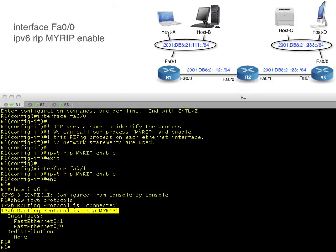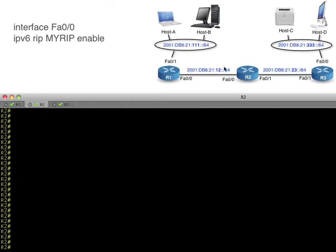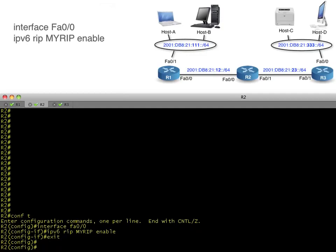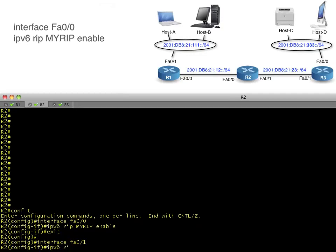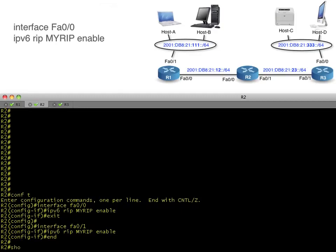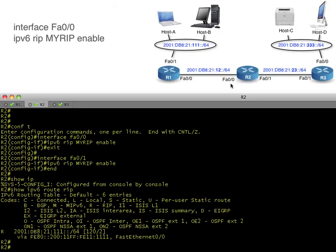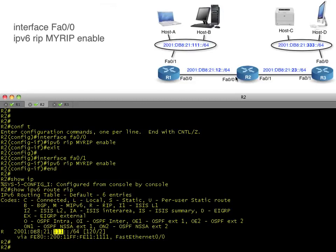Let's head over to R2 and configure it with RIP. RIP works very similar to how it did in IPv4 — it sends updates every 30 seconds, sends the entire routing table, follows the rules of split horizon, poison reverse, and triggered updates. After enabling RIP on both interfaces, if we do a 'show ipv6 route' for just the RIP-learned routes, we've learned about the 111 subnet — that's R1 advertising it to R2. Take a look at the next hop too.